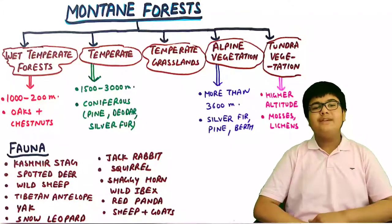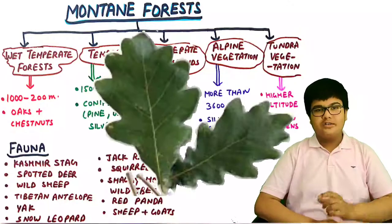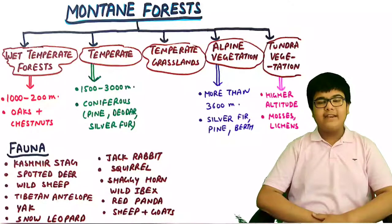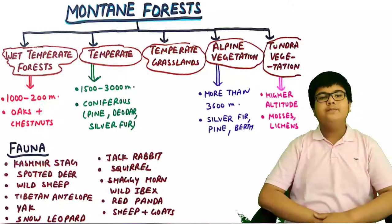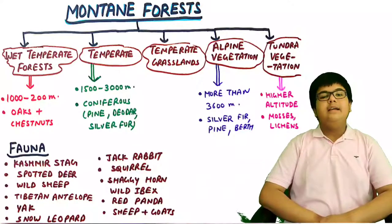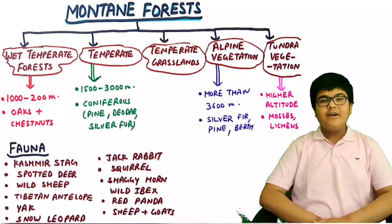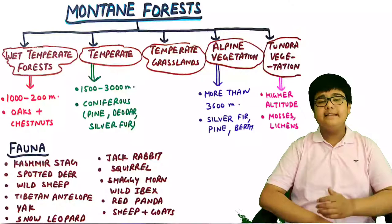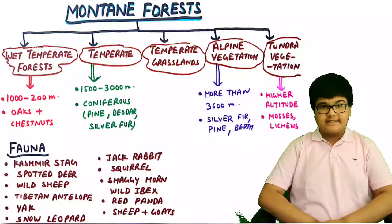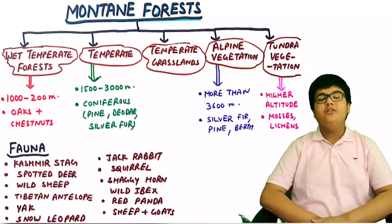Wet temperate forests are found at altitudes of 1,000–2,000 metres and contain broad-leaved trees such as oaks and chestnuts. Temperate forests are found at 1,500–3,000 metres with coniferous trees like pine, deodar, and silver fir. Above that come temperate grasslands. Alpine vegetation is found above 3,600 metres with silver fir, pine, and beech. Alpine grasslands are used by Van Gujjars, Bakarwals, and other nomads for grazing cattle.